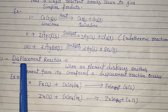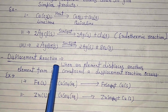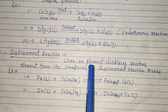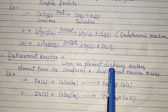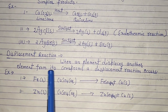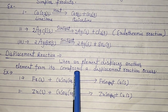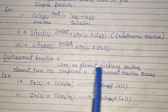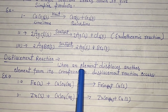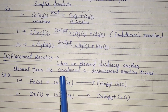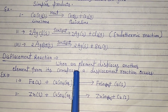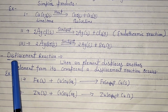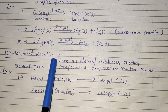Next type: displacement reaction. A displacement reaction is defined as one in which an element displaces another element from its compound. When one element displaces another element, that reaction is called a displacement reaction.